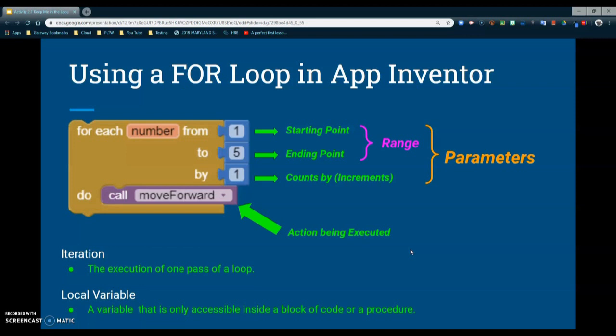For now we're going to focus on what that for block does and how we can utilize it. Keep in mind this is basically what we call an iteration, which is the execution of one pass of the loop. In this case we have five iterations. Your code is being run five times through that block. The local variable, which is a variable that is only accessible inside this block of code, is that number block you see in orange. That is where all the information is being stored to make sure the loop is performed accurately.